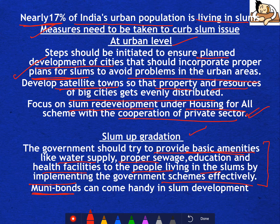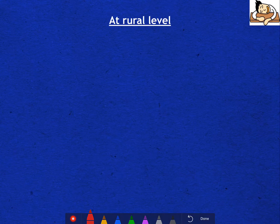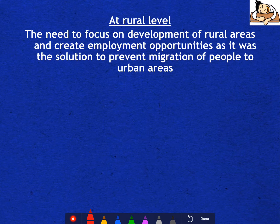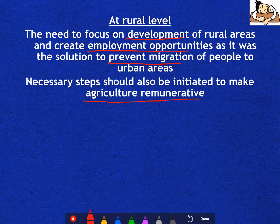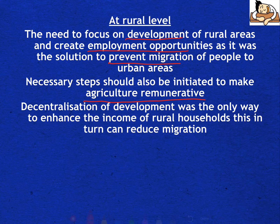Municipal bonds, like Ahmedabad has started, can be used for slum development. At the rural level, the goal is to reduce rural-to-urban migration by developing rural areas. Create employment opportunities there so that prevention of migration is achieved. Agriculture can be made remunerative, and decentralization of development can enhance the income of rural households, which can also reduce migration.